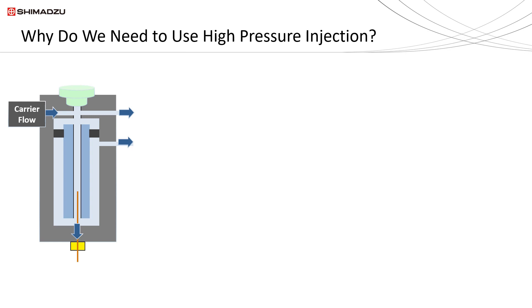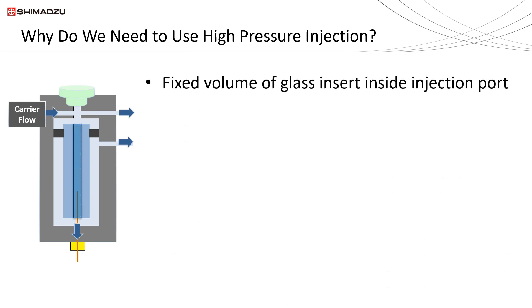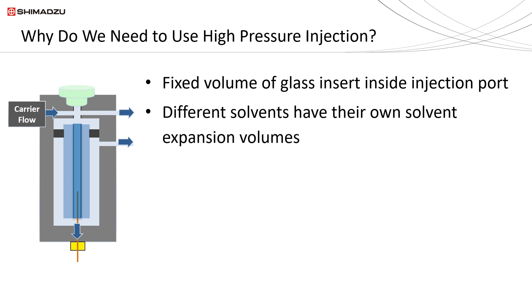Inside the injection port in a gas chromatograph, there is a glass insert installed. The glass insert has a fixed volume depending on the dimension of the glass insert used. When liquid sample is introduced into the injection port, it will get vaporized inside the glass insert. Different solvents have different solvent expansion volumes depending on the type of solvent, injection temperature, injection volume, and column head pressure — which determines how much vapor would be produced from that injection.